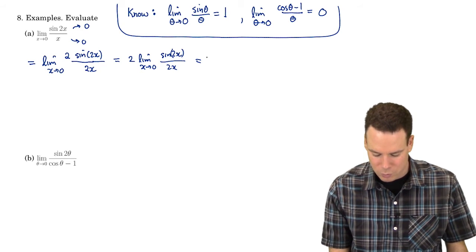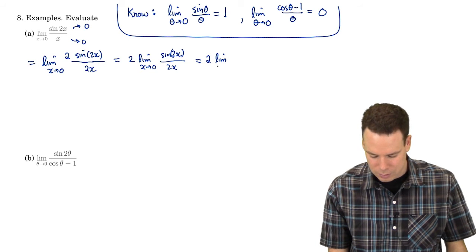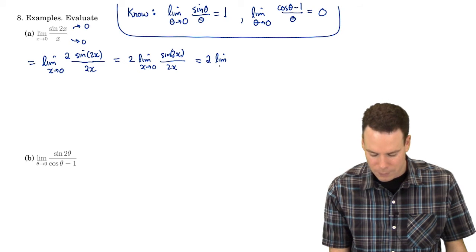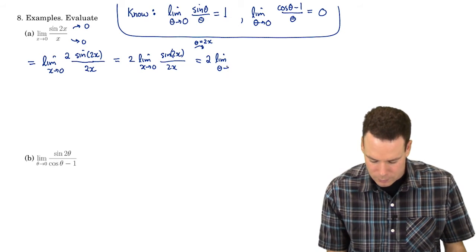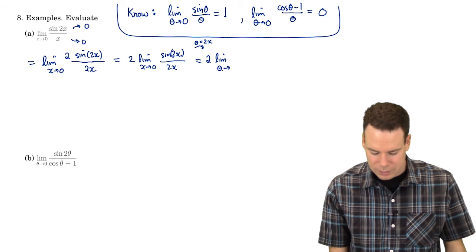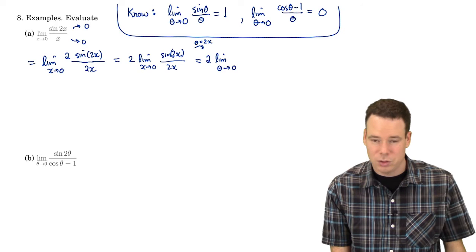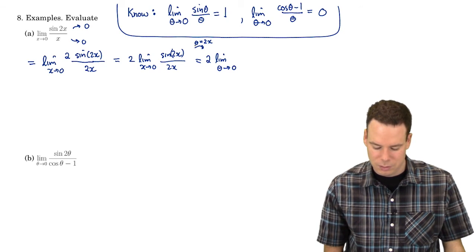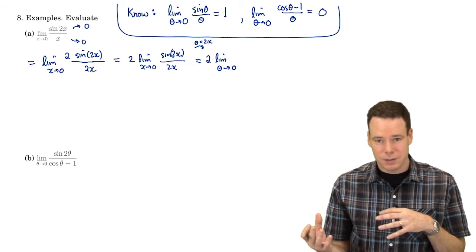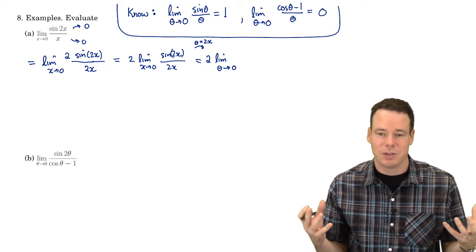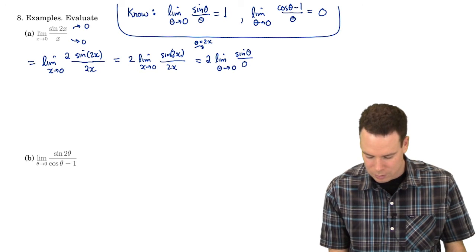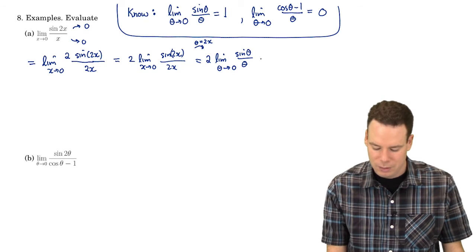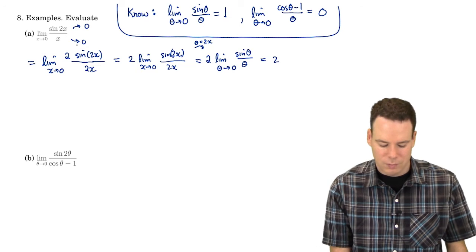I'm going to put one more step in here to make this entirely clear. I'm going to introduce a new variable theta to replace the variable 2x. So if x goes to 0, that's the same as saying theta goes to 0, because theta is twice x — if x is going to 0 then theta is going to 0. So I can replace 2x with theta throughout, and I've rewritten my limit in terms of my new variable theta. We immediately see that equals 1, and with the 2 out front, the value of our limit is 2.